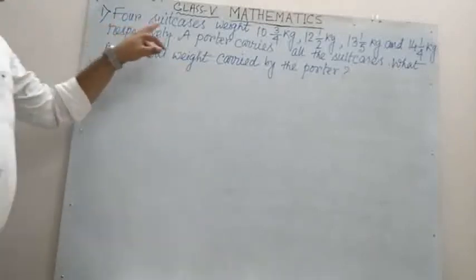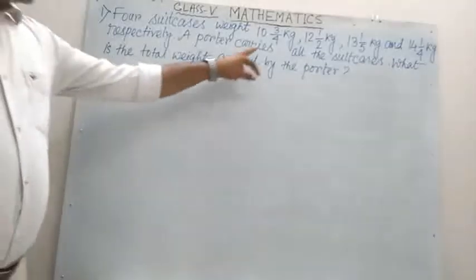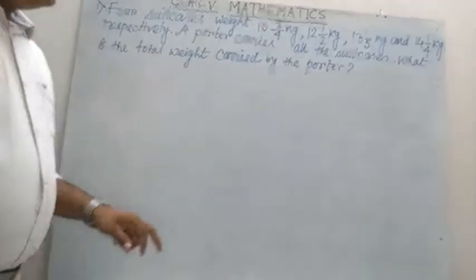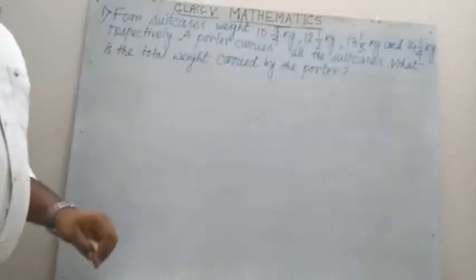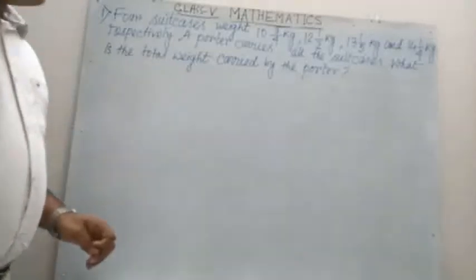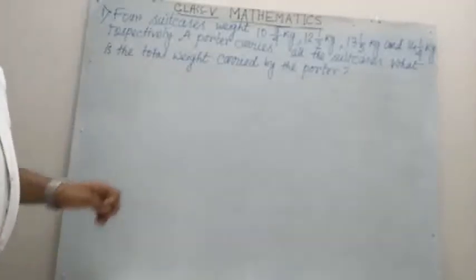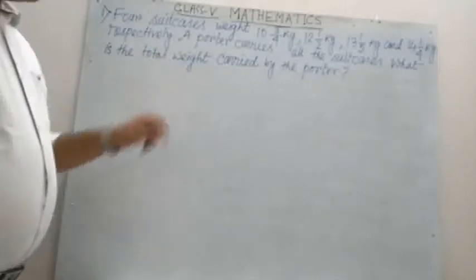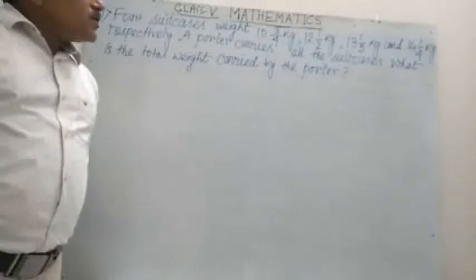Number 1: 4 suitcases with 10 whole 3/4 kg, 12 whole 1/2 kg, 13 whole 1/5 kg, and 14 whole 1/4 kg respectively. A porter carries all the suitcases. What is the total weight carried by the porter? Total means we have to add all. So, total weight carried by the porter.